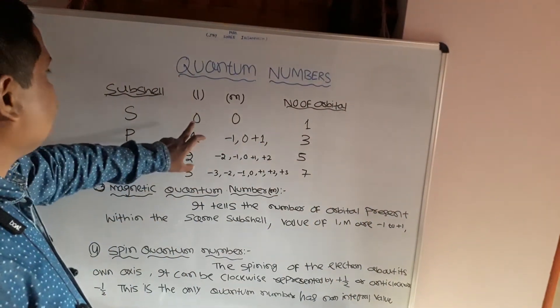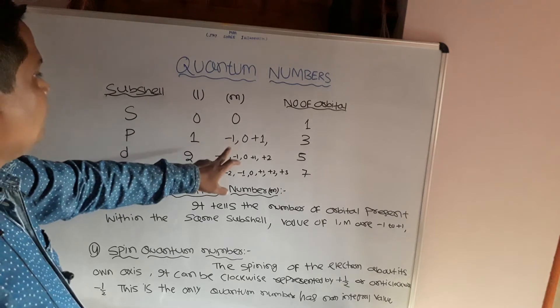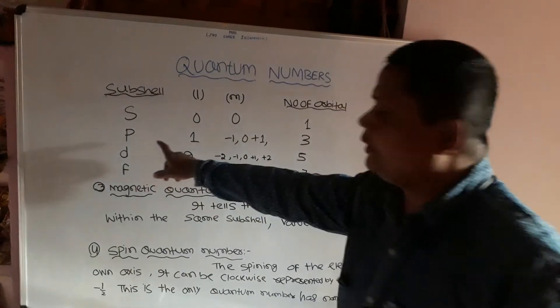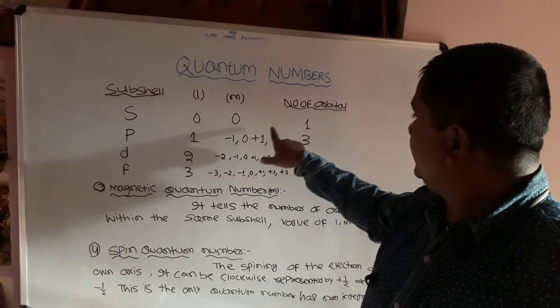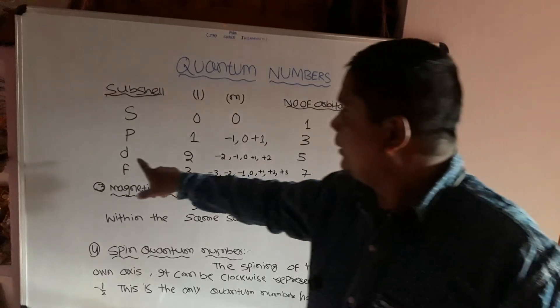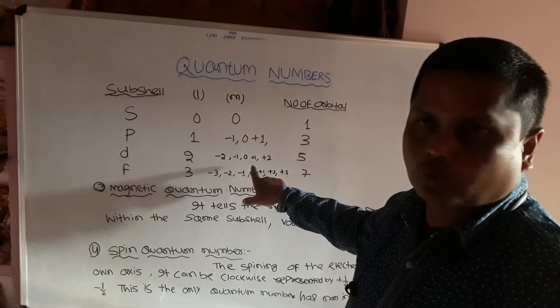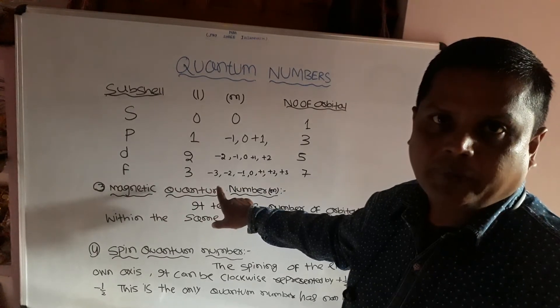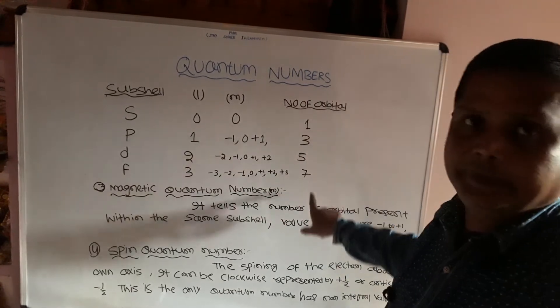The subshells, their l values, magnetic quantum number m values, and number of orbitals are: s (l=0, m=0, 1 orbital); p (l=1, m= -1, 0, +1, 3 orbitals); d (l=2, m= -2, -1, 0, +1, +2, 5 orbitals); f (l=3, m= -3, -2, -1, 0, +1, +2, +3, 7 orbitals).